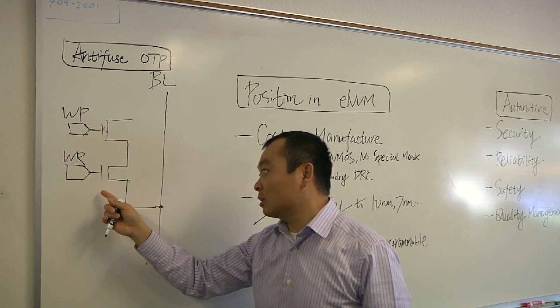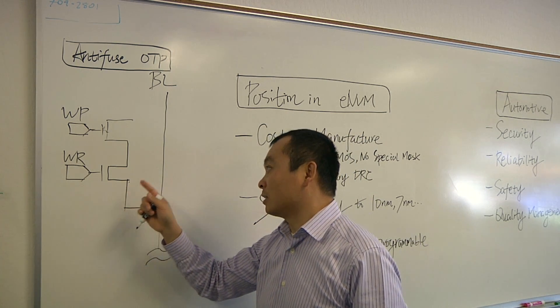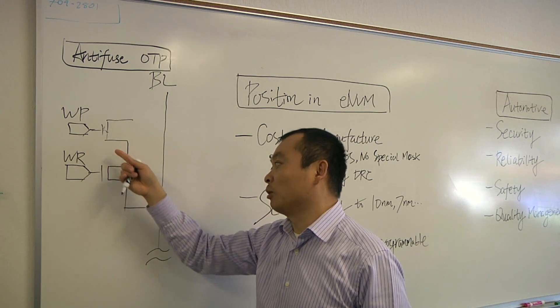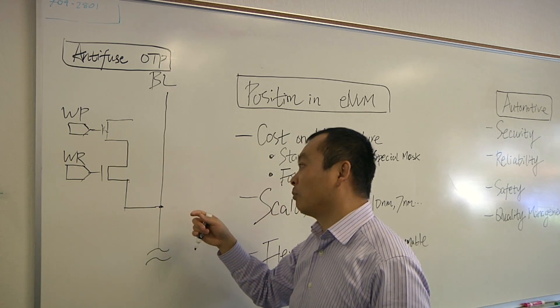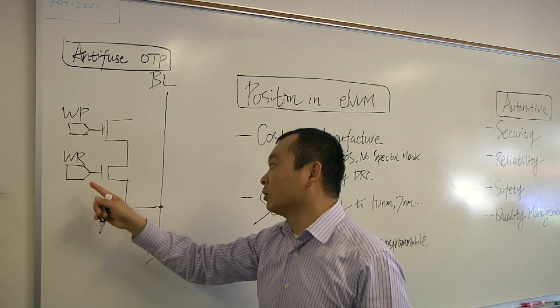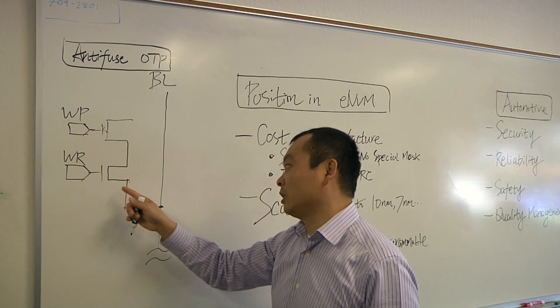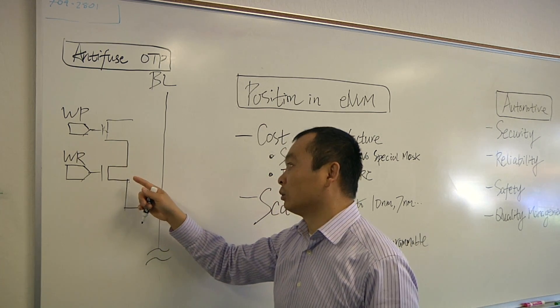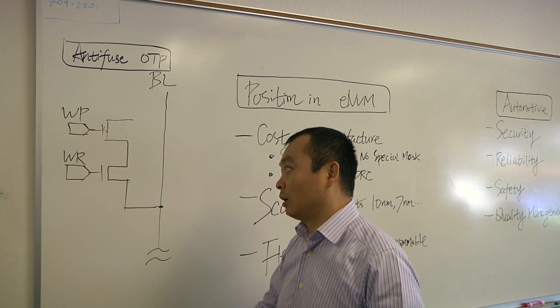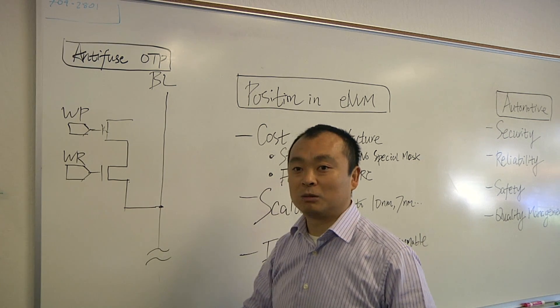The WR cell here is used for selecting the storage cell WP. So during the read programming operation, we add a voltage on the WR to open the read transistor to select the target bit.